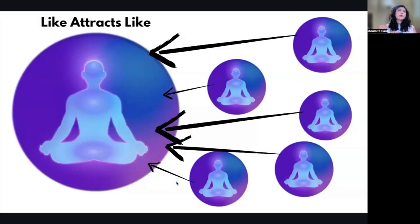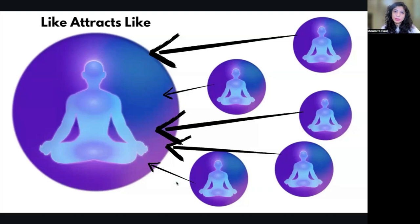How you treat yourself is what you are going to see outside. Like attracts like. If you don't prioritize yourself, you'll attract people who don't prioritize you. If you don't respect yourself, you'll attract people who don't respect you. If you don't love yourself, you'll attract people who don't love you. If you violate your own boundaries, you are going to attract people who violate your boundaries.